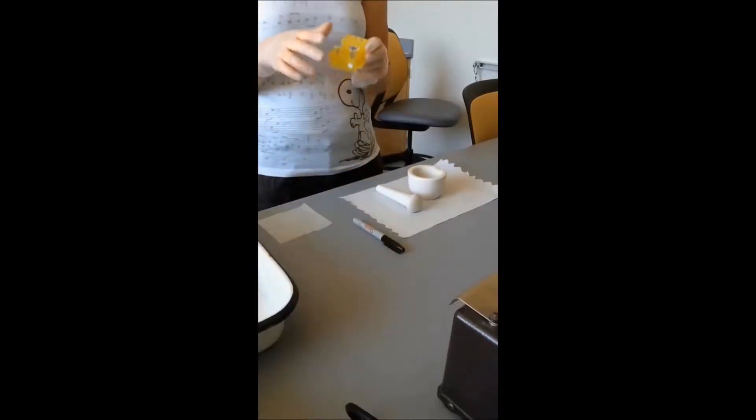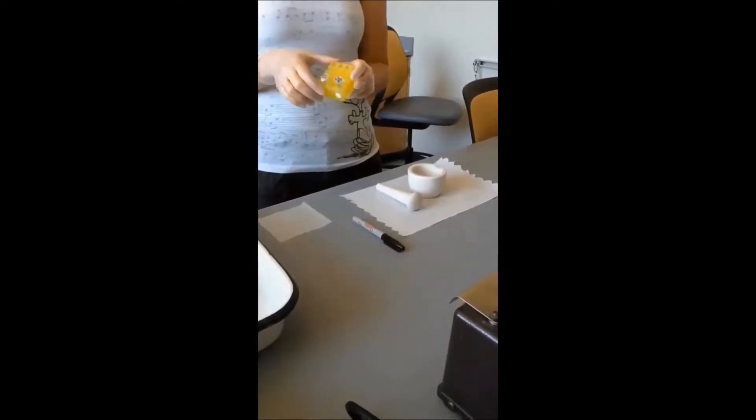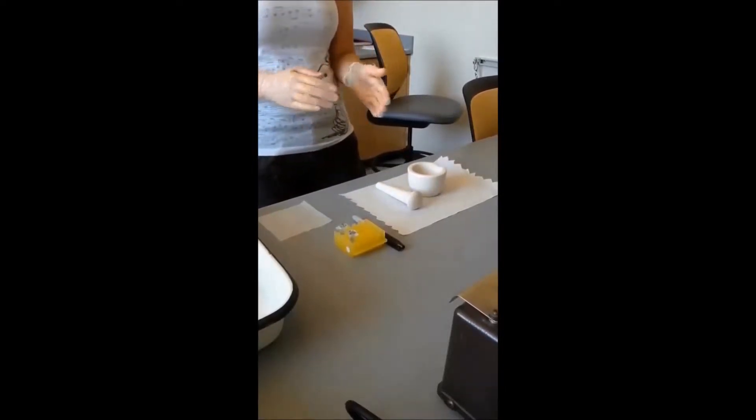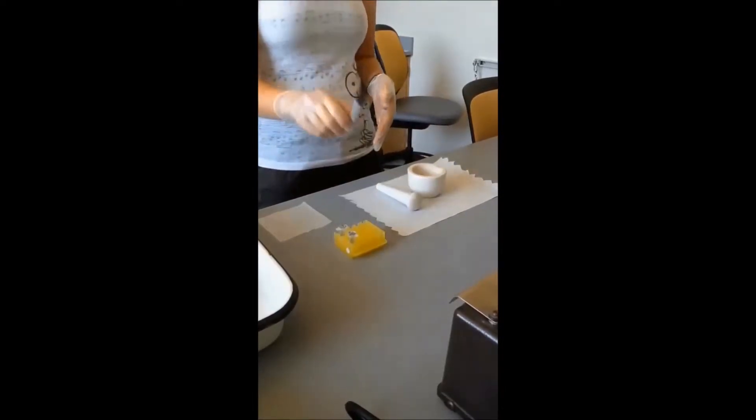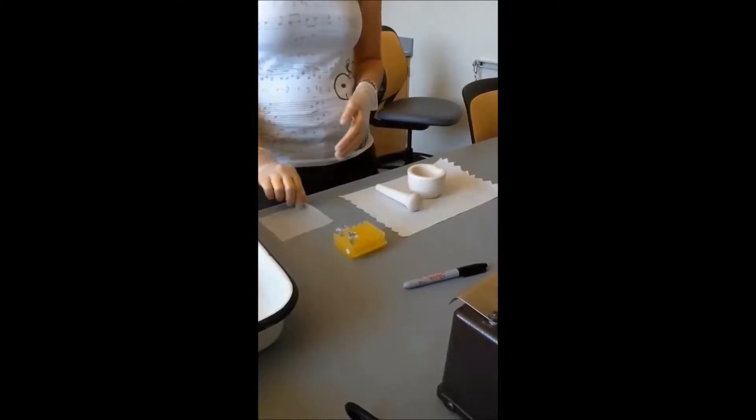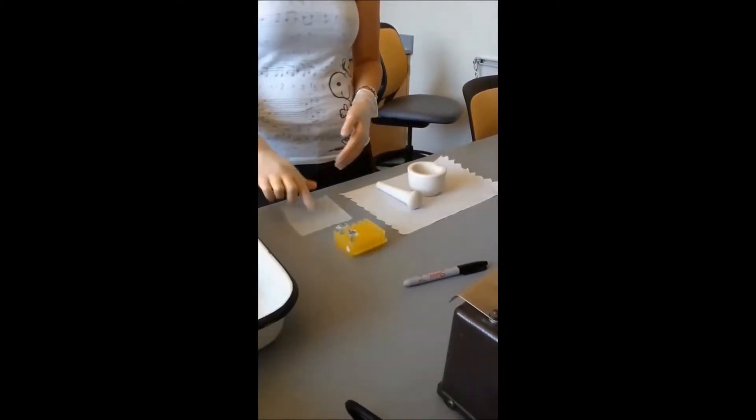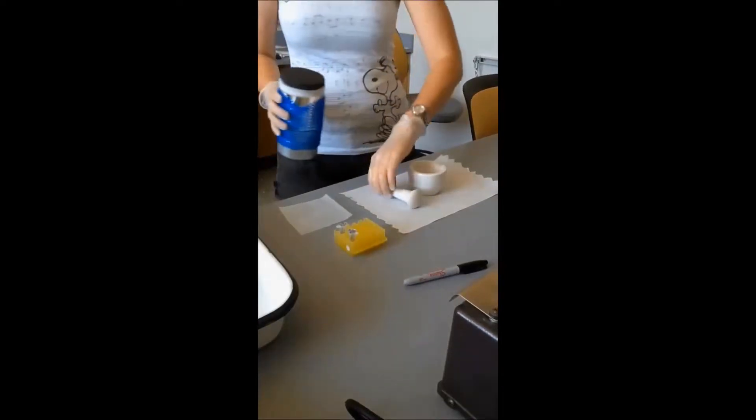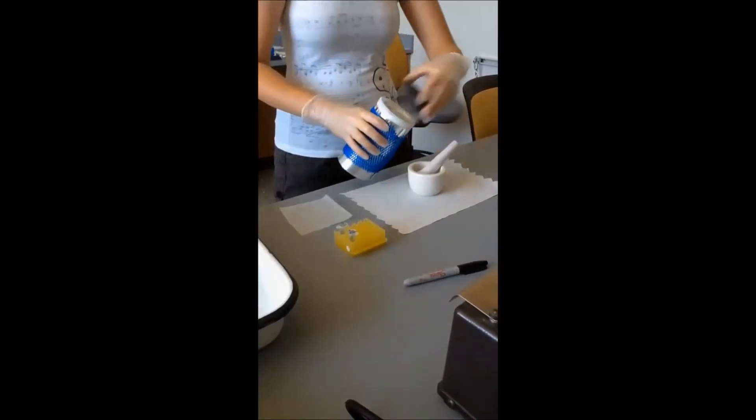We have two labeled 1.5 milliliter microcentrifuge tubes that we will be using to store the sample at the end, and we have a Sharpie to label those. We have some whey paper to obtain the sample on for ease of putting it in the mortar, and we'll begin by cooling the mortar and pestle with liquid nitrogen.